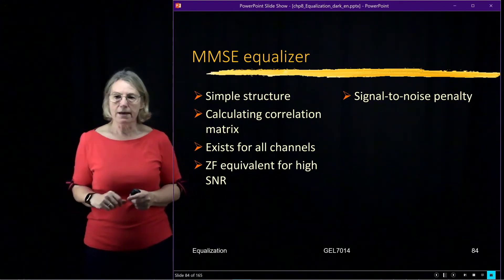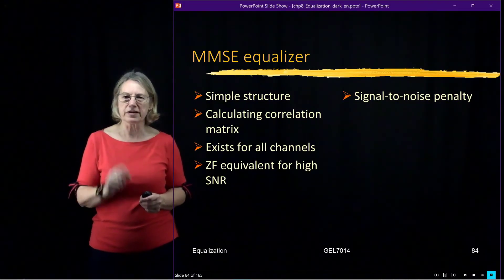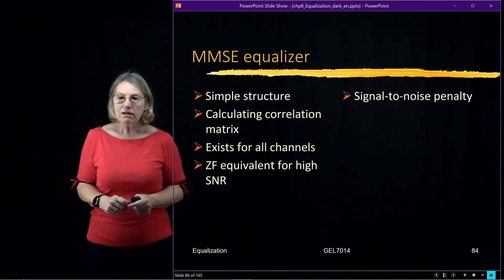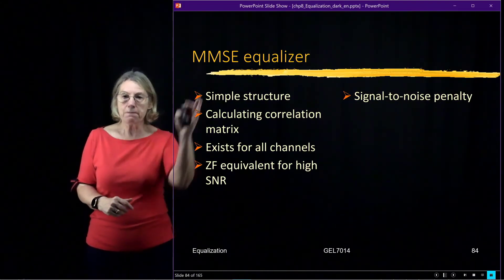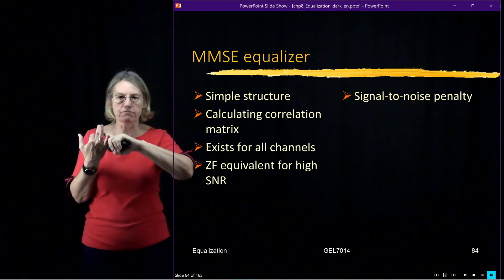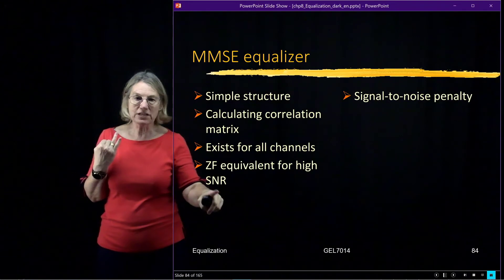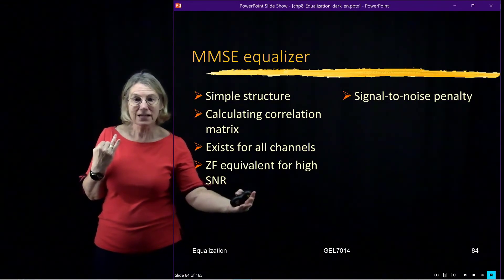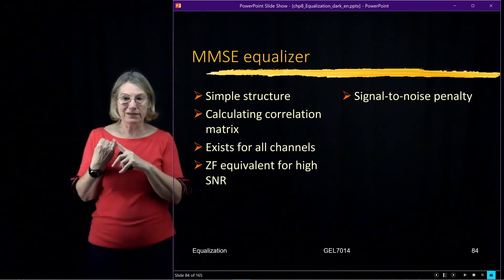Suppose that I am in a very, very high signal-to-noise ratio region. Well, if I'm trying to minimize the error, and that error could come from ISI or it could come from noise, if there's not much noise because it's got a really strong signal, well then all of the errors are coming from the ISI.